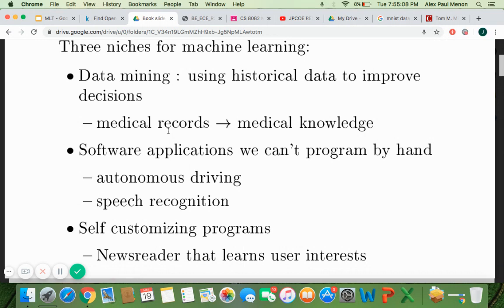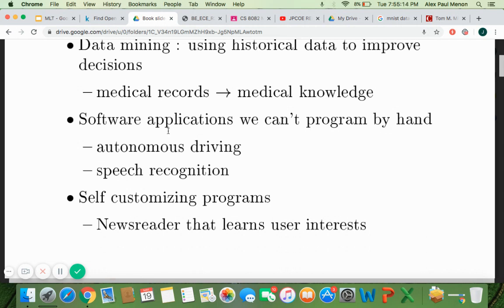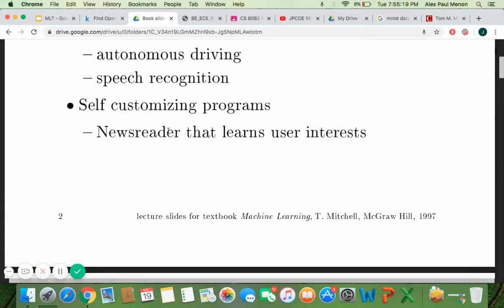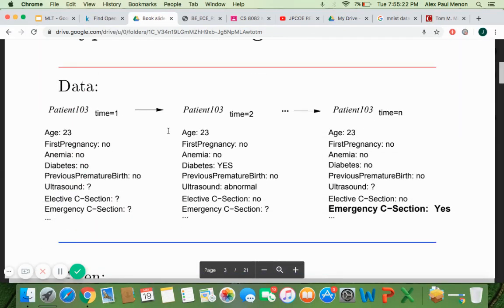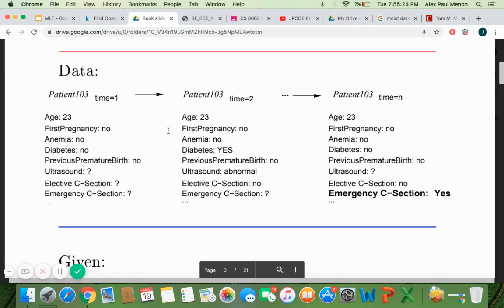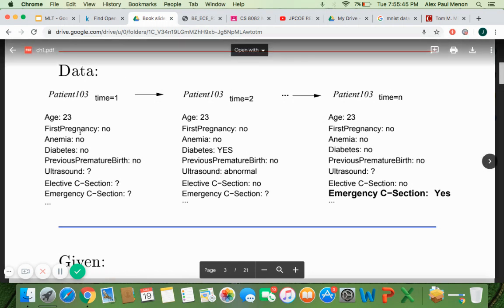So a newsreader that learns user interests. So you can try to bring in a newsreader who can easily find what news you are interested in and read it out to you. So for example, in terms of data mining, we have this simple data set where we are trying to analyze if a pregnant patient is going to have a normal delivery or an emergency cesarean. So this depends on a lot of factors, a lot of instances that are given there. So these are all different instances that we can see.